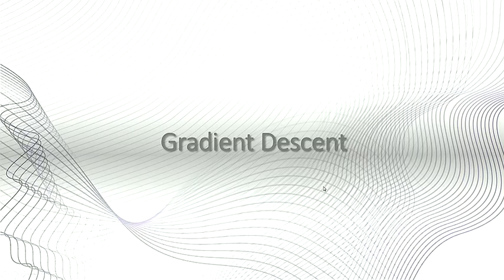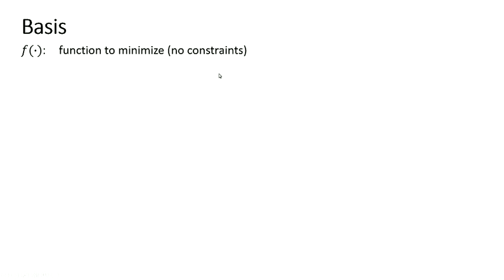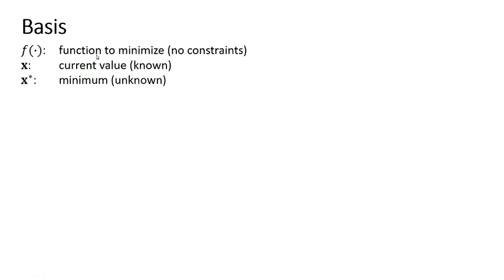We begin with gradient descent. We have a function to minimize. Suppose we have X, a known value of X — it is not the solution, but that's where we are. During the algorithm it will be a point at each iteration. X is the current value, it's known. We want to find the minimum, and X star is unknown. We assume that X star is delta X away from X.